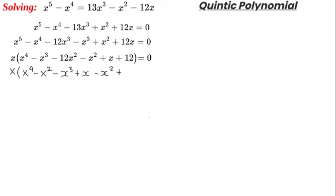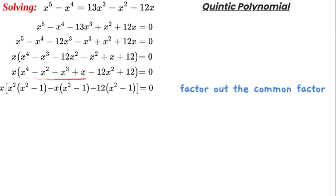We can factor out x^2 - 1 from each pair. For the first two we get x^2(x^2 - 1) - x(x^2 - 1) - 12(x^2 - 1), so we have a common factor.